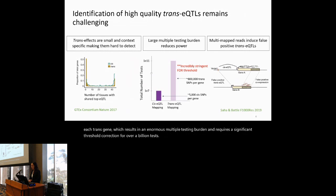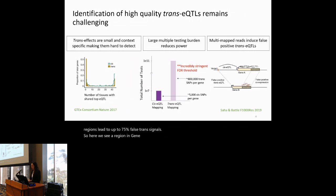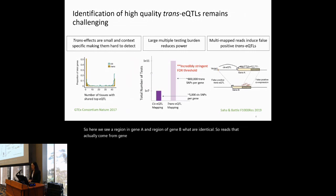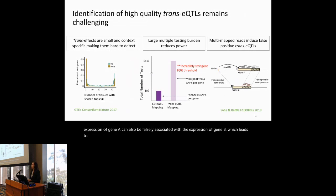Third, issues with aligning sequencing data — such as multi-mapped reads and reads from repetitive regions — lead to up to 75% false trans signals. For example, if a region of gene A and gene B are identical, reads from gene A can align to gene B, and a variant associated with gene A's expression can be falsely associated with gene B's expression, producing a false positive trans-EQTL signal.